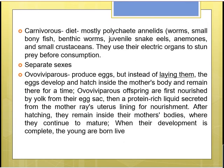Coming to their diet, they are carnivorous and mostly feed on polychaete annelids, worms, small bony fish, benthic worms, juvenile snake eels, anemones, and small crustaceans. For catching prey they use the electric organs to stun them before consuming them.